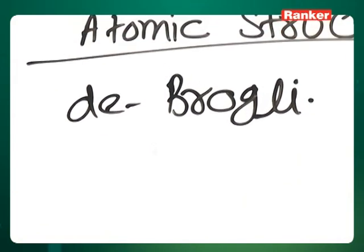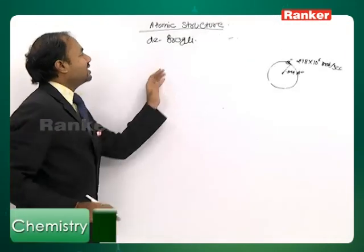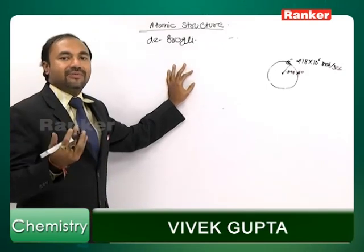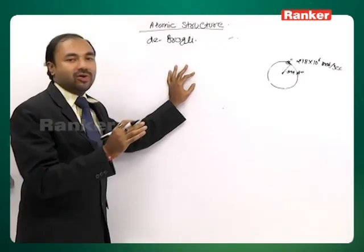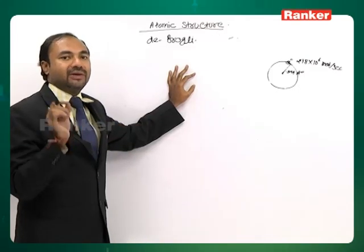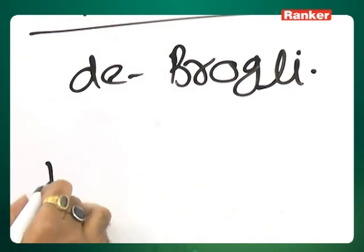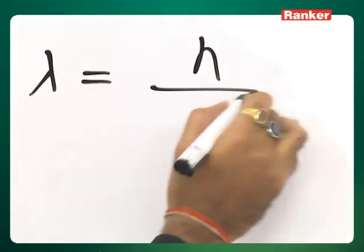De Broglie equation. De Broglie says that every matter in this world can behave as a wave. Actually, every moving object is associated with a certain wave and its wavelength can be given by using the formula lambda equal to h by mv.